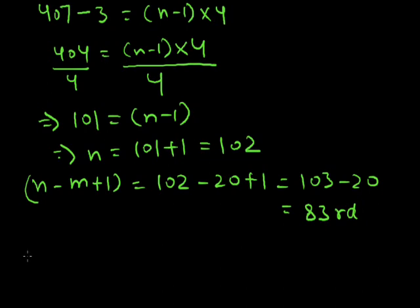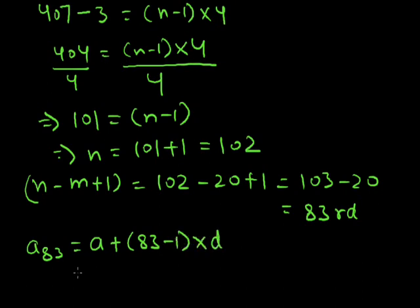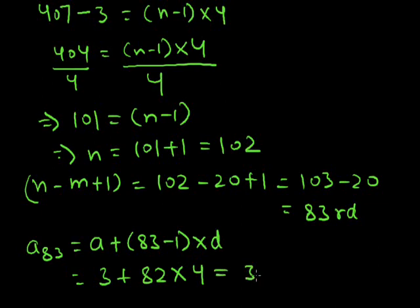The 83rd term is a_83 = 3 + (83-1)×4 = 3 + 82×4 = 3 + 328 = 331. We get the same answer of 331 from both methods. You can choose whichever method is easier for you to understand. Thank you.